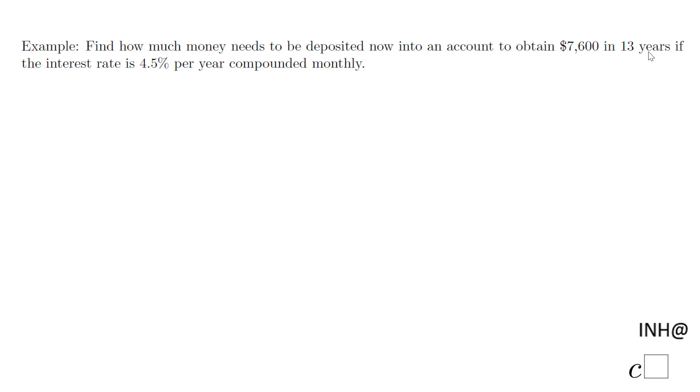Welcome or welcome back to C Squared. In this example, we need to find how much money needs to be deposited into an account to obtain $7,600 in 13 years if the interest rate is 4.5 percent per year compounded monthly.